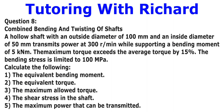Question 8 states: a hollow shaft with an outside diameter of 100 millimeters and an inside diameter of 50 millimeters transmits power at 300 revolutions per minute, while supporting a bending moment of 5 kilonewton meters. The maximum torque exceeds the average torque by 15 percent. The bending stress is limited to 100 megapascals. They want you to calculate the equivalent bending moment,